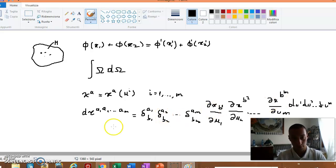Hence, if X^(a₁a₂...aₙ) is a covariant tensor of rank n, the quantity X^(a₁...aₙ) multiplied by dτ_(a₁a₂...aₘ) is a scalar quantity.